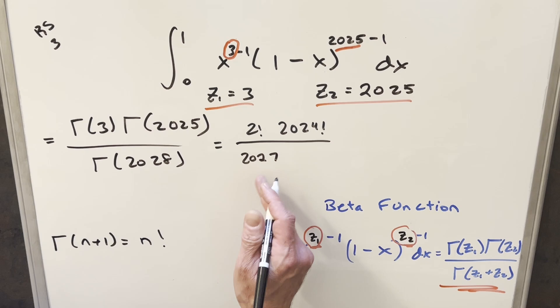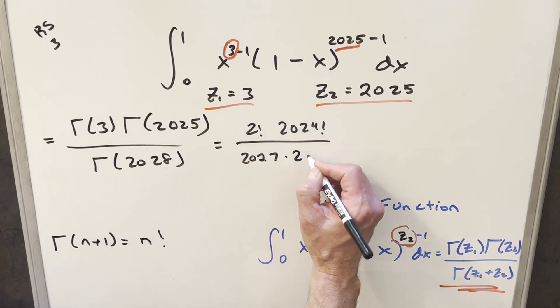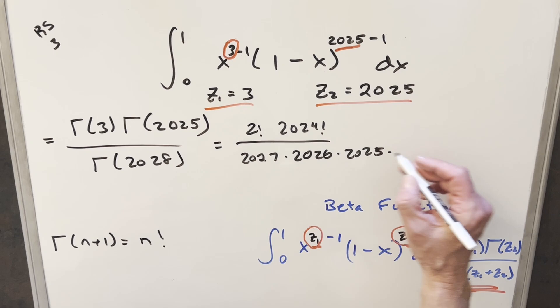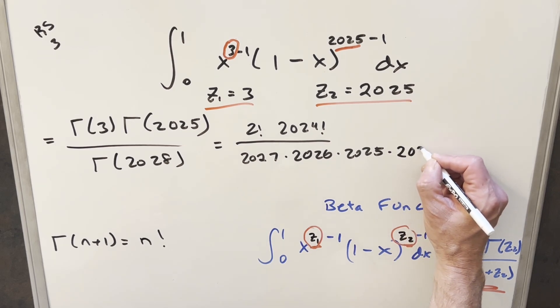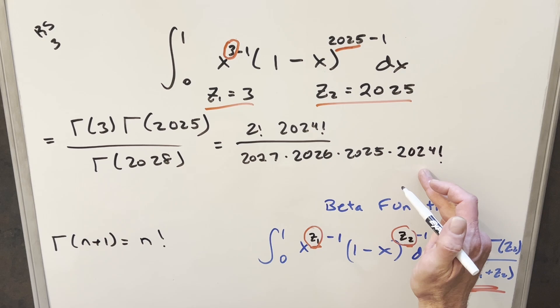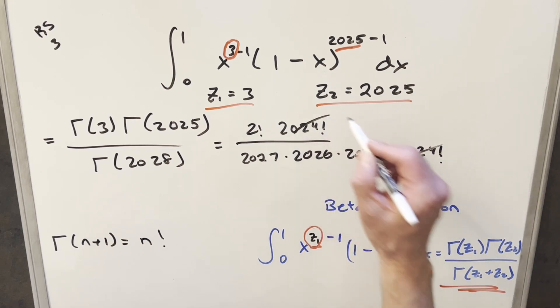But what I want to do for 2027 factorial, I want to write this out, all the terms. Just keep writing this, but I want to stop at 2024. So I'll write the rest of it as 2024 factorial. And of course, the reason I did that is just because I want this cancellation here. So I'll cancel this with this.